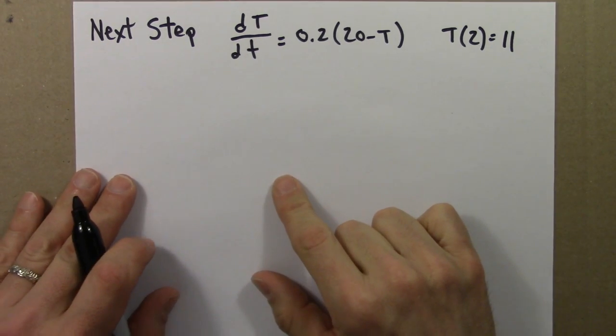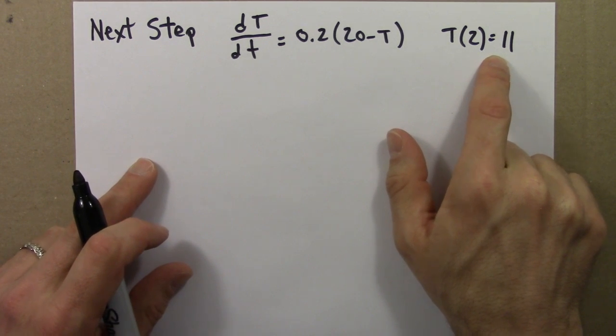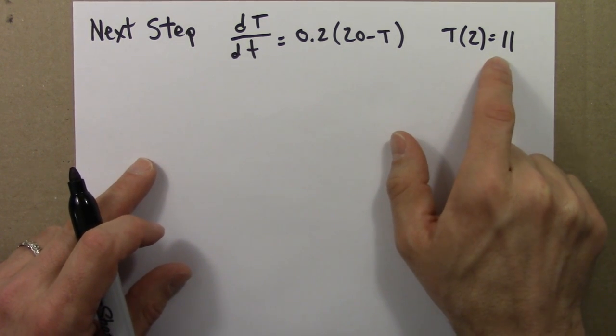So let's continue with this example. We just found that T of 2 is 11, or approximately 11, because we had to do some make-believe to get this.